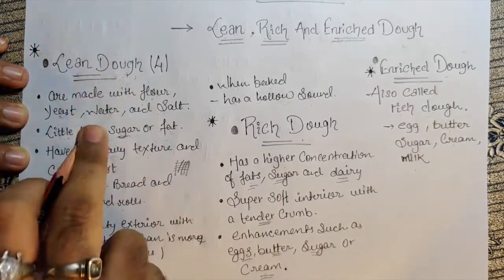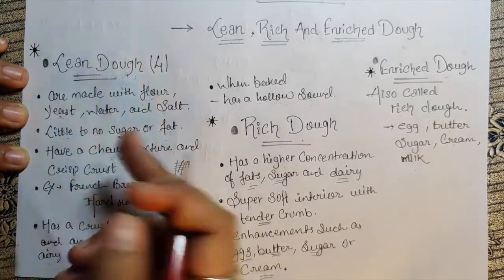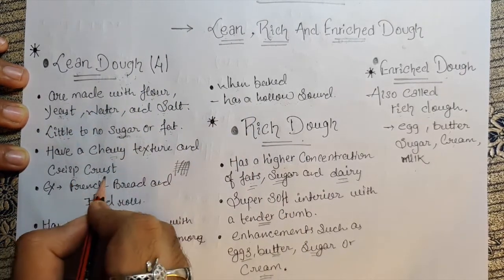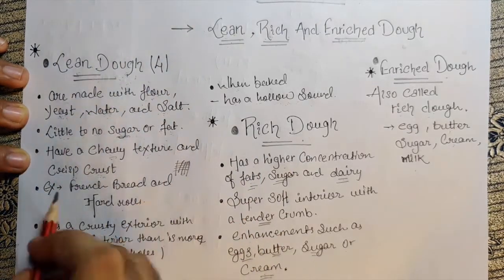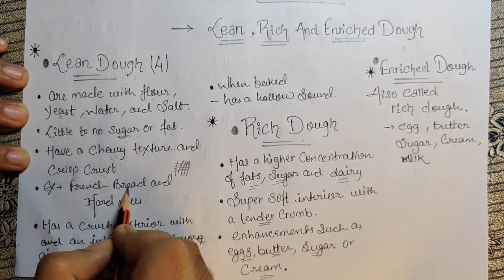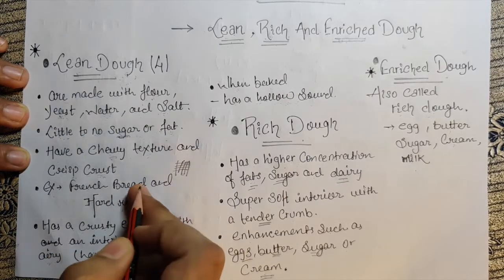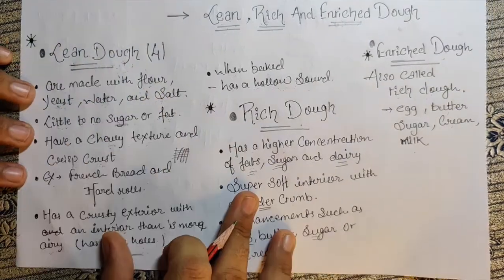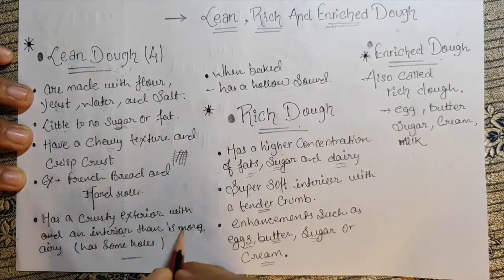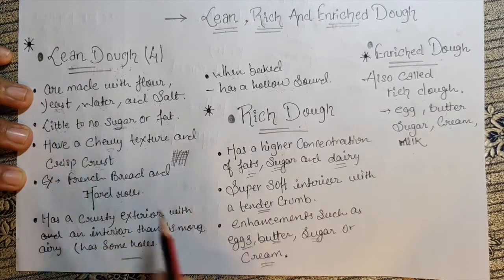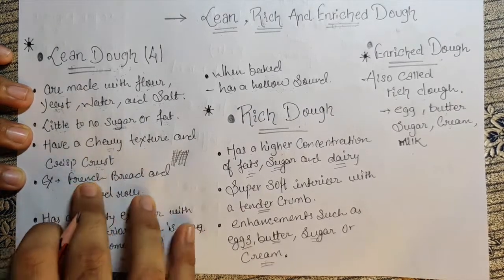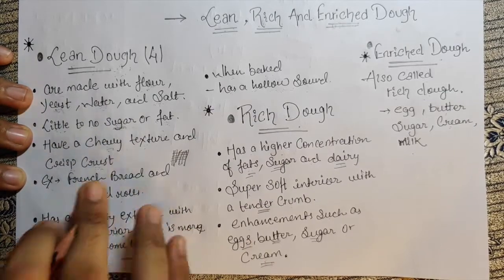Since lean dough only has flour, yeast, water, and salt — no butter, no milk — it gives a chewy texture with a crisp crust on top. For example, French breads and hard rolls like baguettes are lean dough. Because of these ingredients, it has a crusty exterior with an airy interior due to the CO2 from yeast, which creates some holes.